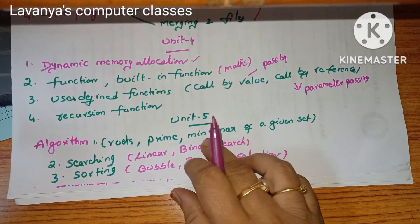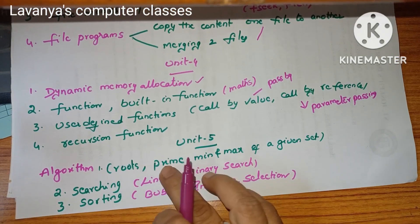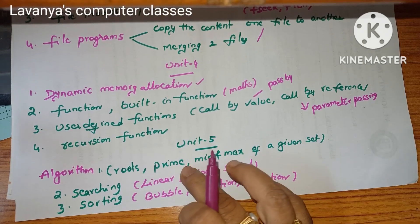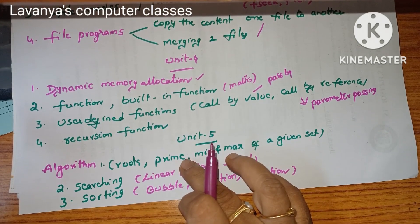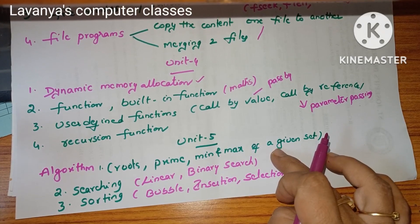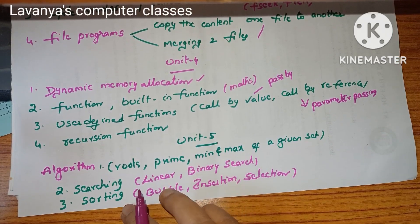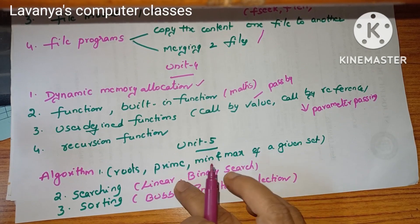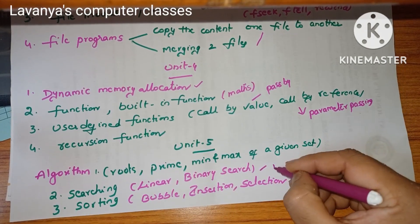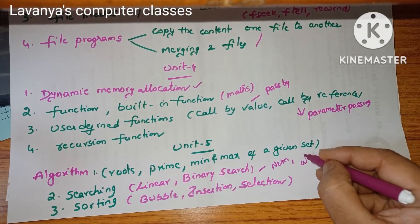Recursion programs are very very important. Unit 5 is a simpler unit covering algorithms. What is an algorithm? Write algorithms for: roots of a quadratic equation, checking if a number is prime or not, and finding the minimum and maximum of a given set of elements. Then searching and sorting — what is searching? Techniques include linear search and binary search, with numerical examples and algorithms.